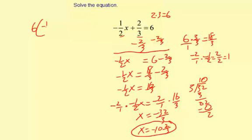6 times negative 1 half x plus 2 thirds equals 6 times 6. So now I'm going to distribute the 6 on the left.